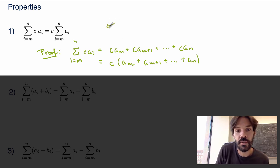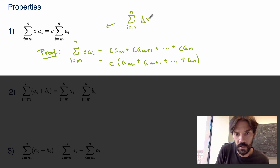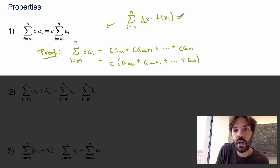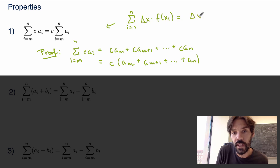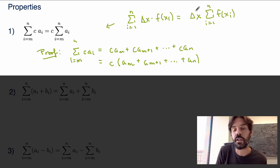For example, in the case of Riemann sums, we had somewhere in the definition a sum from i equals 1 to n of delta x times f(x_i). Now delta x does not depend on i at all, so I can take it out and rewrite the same summation with delta x factored out in front. The two expressions are exactly equal because I'm just factoring out a constant term that appears for each term in the summation.